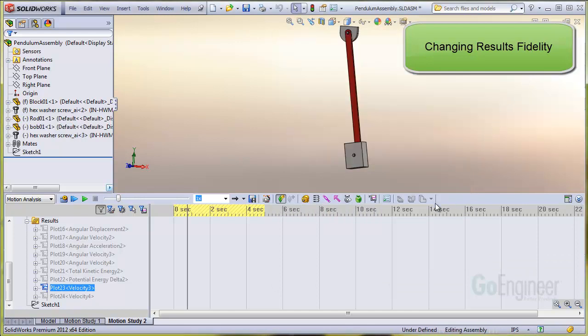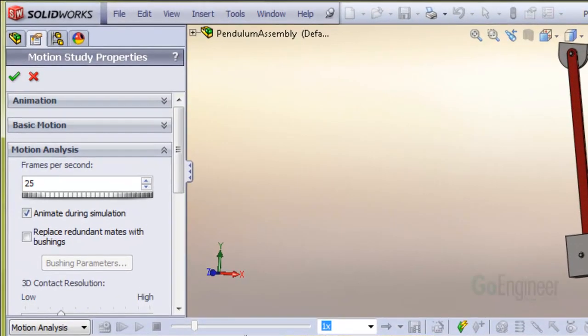Well, all you have to do is change the frame rate. If you select the motion study properties, you can see the frames per second is set here at 25. So I'll just double the setting to 50 frames per second. I'll click OK and rerun the calculation.